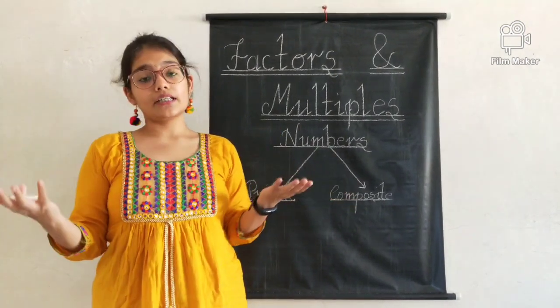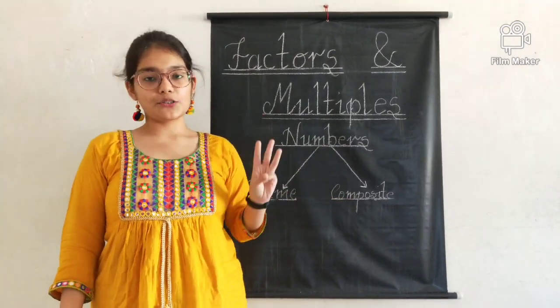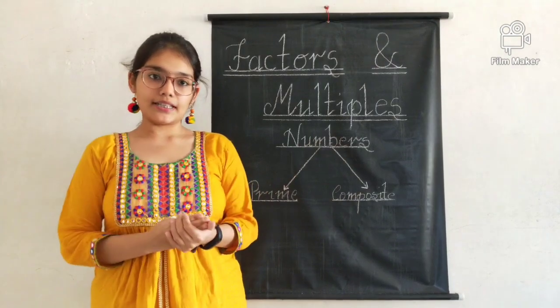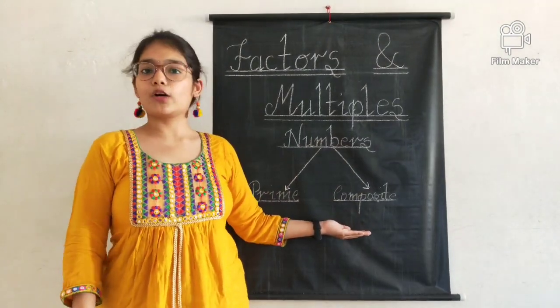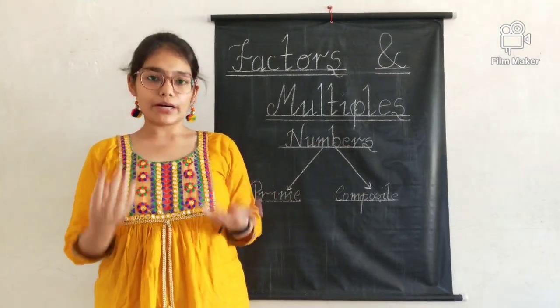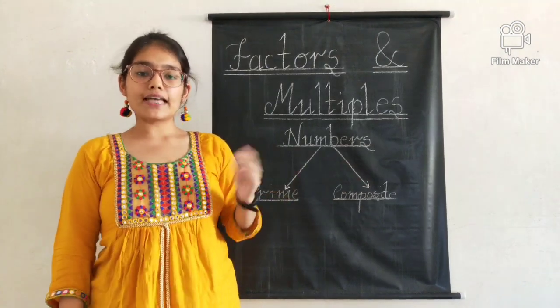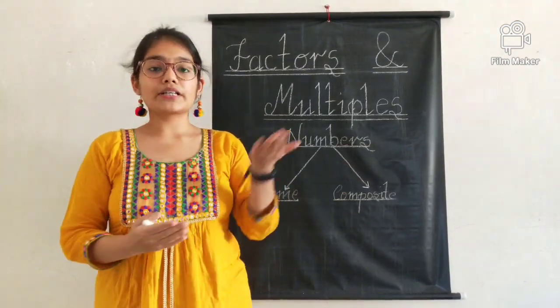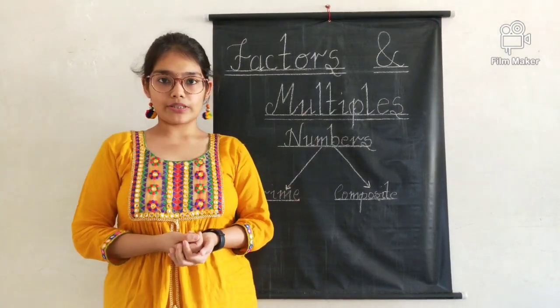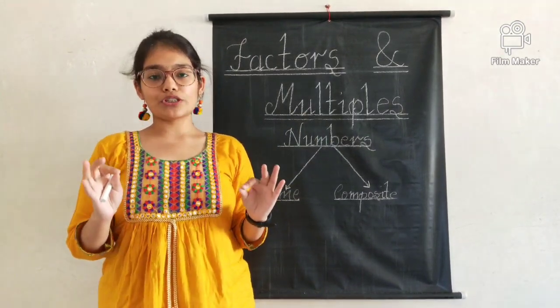Let's move on to composite numbers. Composite numbers are numbers which have more than just 1 and themselves as factors. We have seen the example of 30. 30 has factors: 1, 2, 3, 5, 6, 10, 15, and 30. This is why it is a composite number. Composite numbers are made by prime numbers.